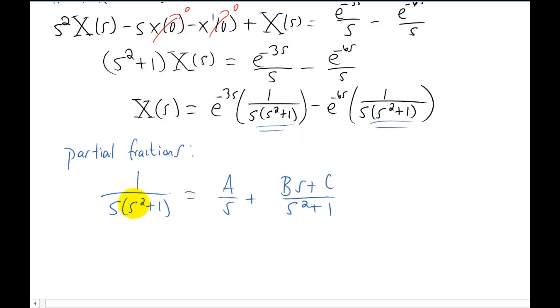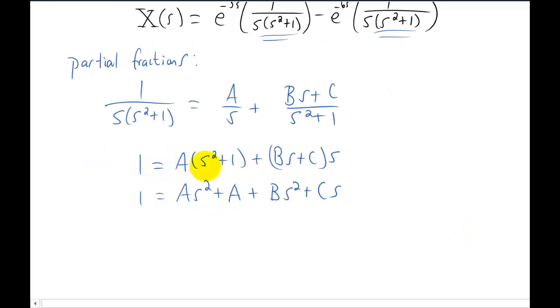So I've set up the partial fraction. Now I'm going to multiply through by the denominator and see if I can solve for A, B, and C. This is the result when you multiply through by the denominator here. I'm distributing out my terms and I'm going to group like terms together.